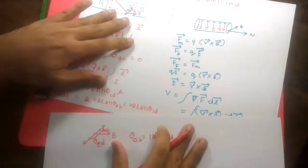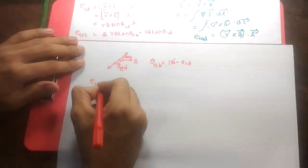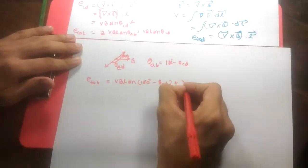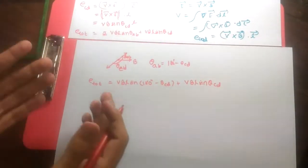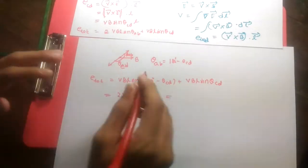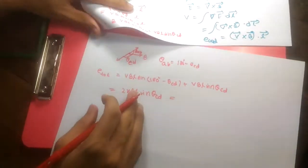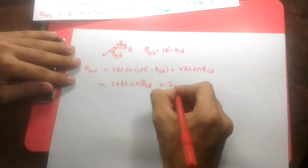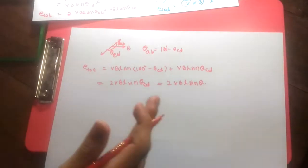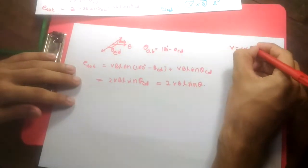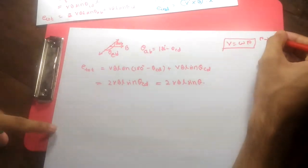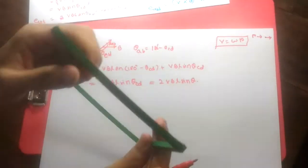Substituting into the total EMF equation: E_total equals VBL sin(180° − θ_CD) plus VBL sin(θ_CD). Since sin(180° − θ) equals sin(θ), this gives 2VBL sin(θ_CD), where θ denotes the angle between the relative velocity and the B vector. Since V is a linear quantity, we replace it with ωR, where R is the distance from the pivot — which lies at the center of the rotating rectangular body — to the edge of the conductor. The expression becomes 2ωRBL sin(θ).